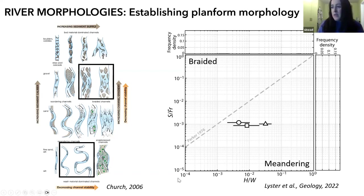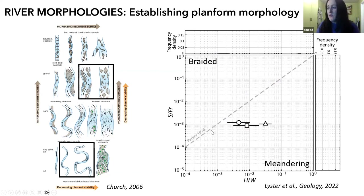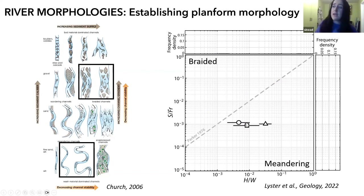The idea is basically a phase diagram. On the x-axis, we have the aspect ratio of a river — the depth-to-width ratio — and on the y-axis, we have the ratio of the slope to Froude number. This is a planform stability field from Gary Parker in 1976. It has a dashed line: if your data sit on one side, you're a meandering river; if your data sit on the other side, you're a braided river. I calculated the channel geometries and paleoslopes for a couple of formations in Utah to see where they sat on the planform stability diagram.